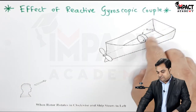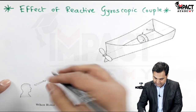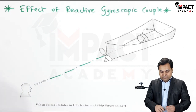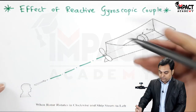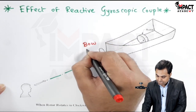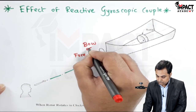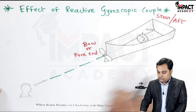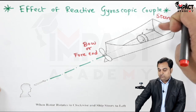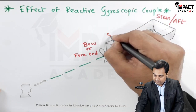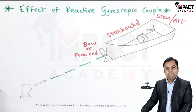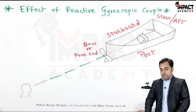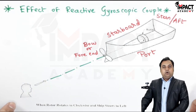First, there is an axis about which the rotor is rotating — I'll extend the axis. Looking from the front, the front position of the ship is called the bow or fore end. The rear part is called the stern or aft. Looking from the stern, the right-hand part of the ship is called the starboard side, and the left part is called the port end or port side.